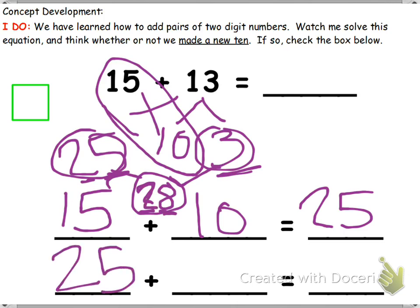So I'm going to write that right here: 25 plus 3 equals 28. So that means that 15 plus 13 also equals 28.